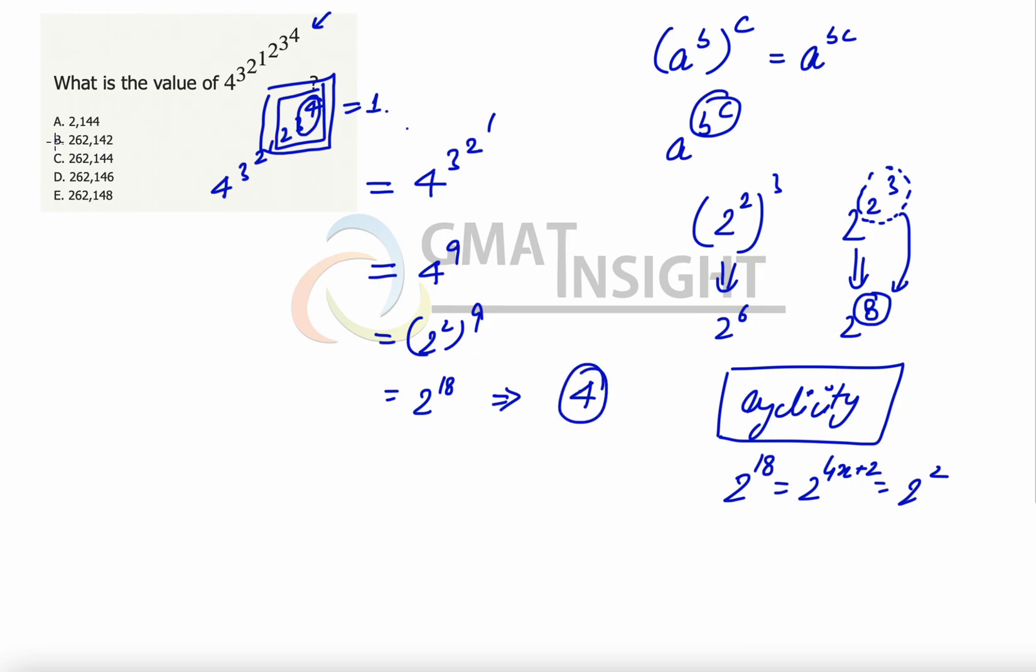That's one thing, which means option B, D, and E can be eliminated. Now we have the choices left only between option A and option C.